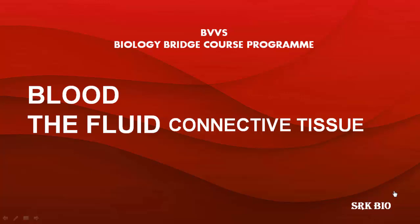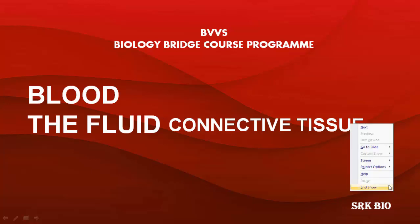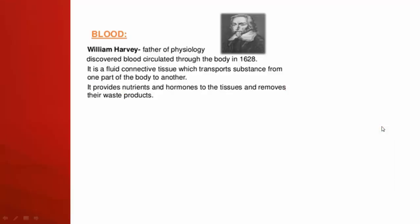Hello dear students, welcome to the biology bridge course program. In this video I am going to explain about blood, which is a fluid connective tissue. In the previous videos I explained about the different types of tissues present in the animal body: epithelial tissue, connective tissue, muscular tissue, and nerve tissue. In this video I am going to explain in detail about the blood.